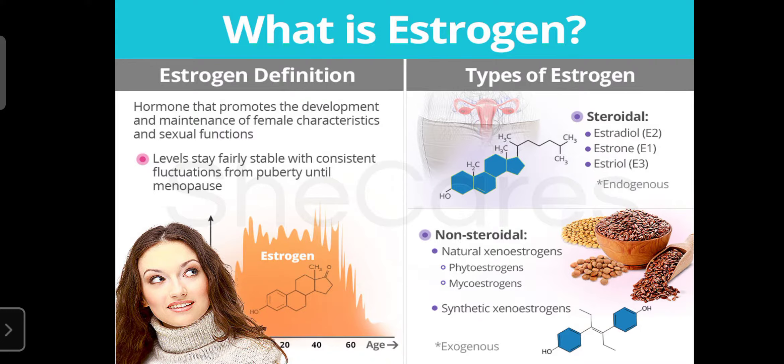Estrogen is a steroidal hormone synthesized from the ovaries, adrenal cortex, and placenta. It is mainly involved in ovulation and pregnancy, and also in the development of secondary sexual organs and characters. Estrogen is required to maintain fertility in women, and a lack of estrogen causes infertility.